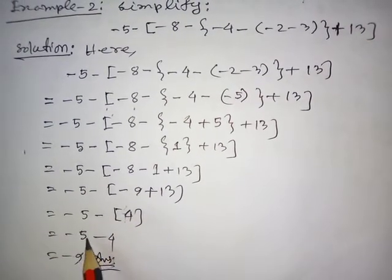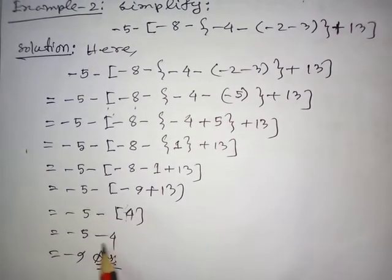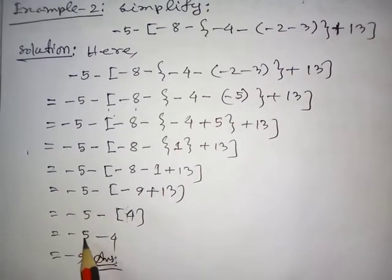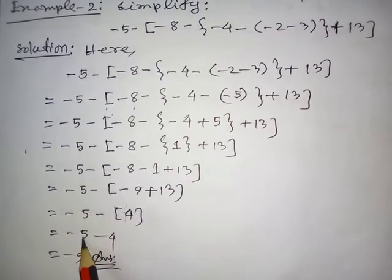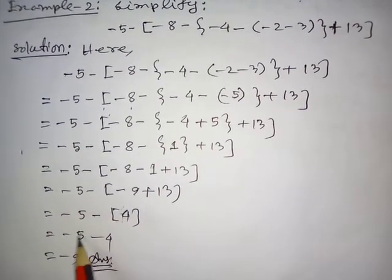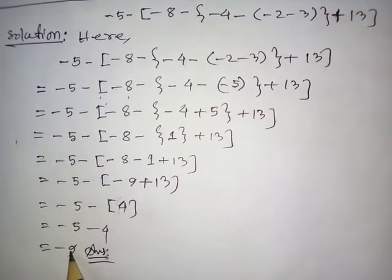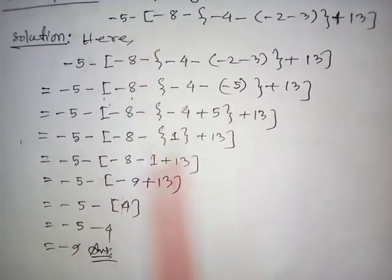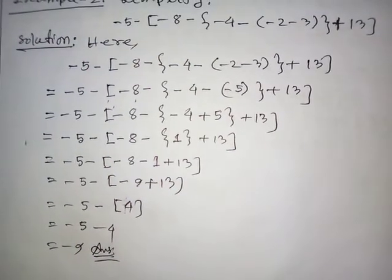We have minus 4 and minus 5 — both the same sign, so we add them: 4 plus 5 equals 9, and the result is minus 9. This completes the simplification of this arithmetic expression.